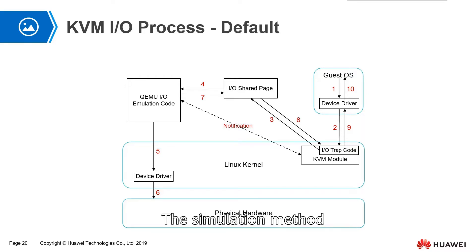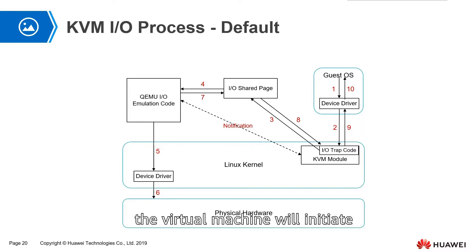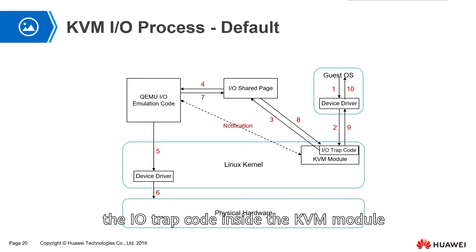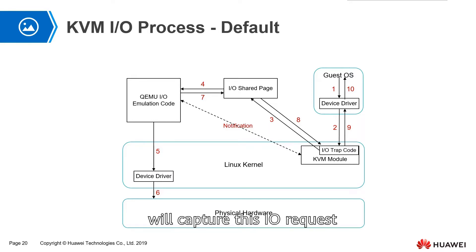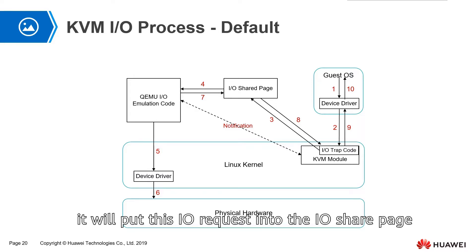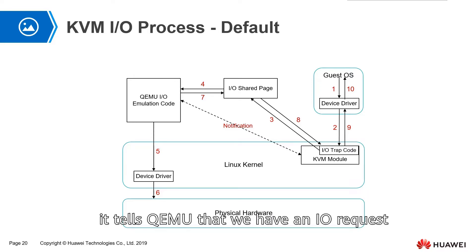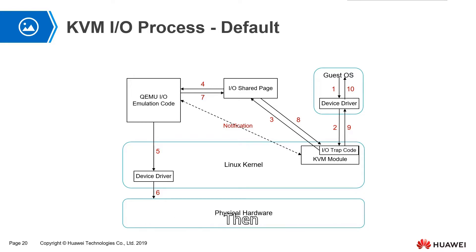The simulation method has to go through a total of 10 steps. The first step is that the virtual machine will initiate an IO operating request. Then it sends a request to its virtual device driver. Then the IO trap code inside the KVM module will capture this IO request. After capturing, it will put this IO request into the IO share page.